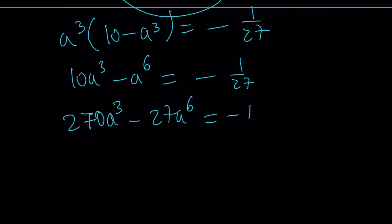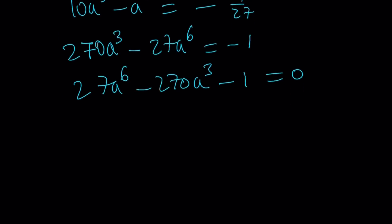270a³ - 27a⁶ = -1. Let's go ahead and put everything on the right hand side. 27a⁶ - 270a³ - 1 = 0. Great. So we got rid of all the fractions. We put everything on the same side. The leading coefficient is positive. Everything looks good.